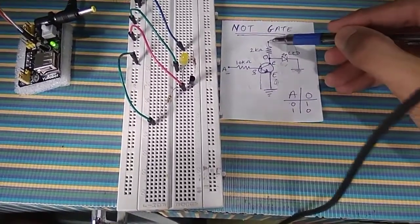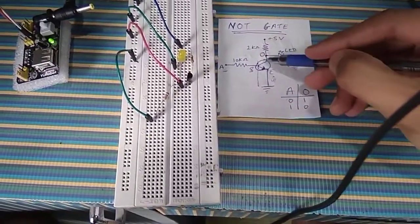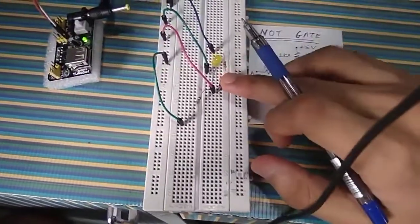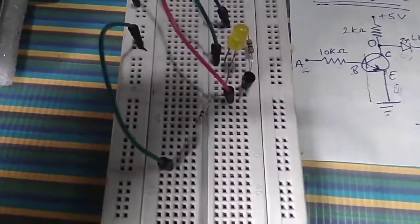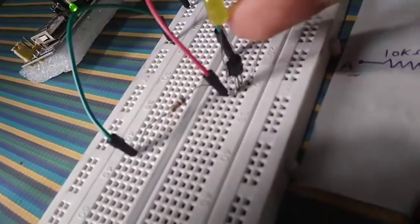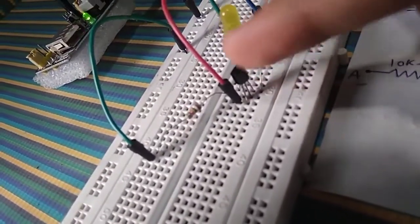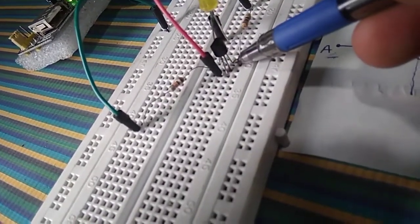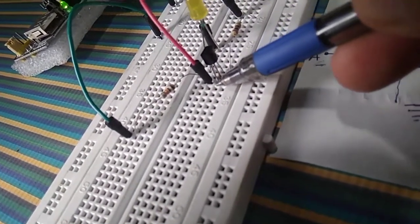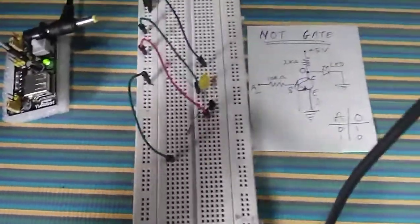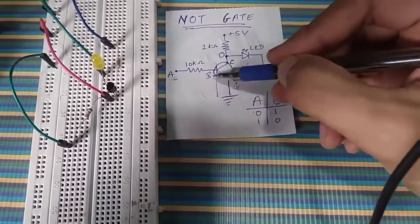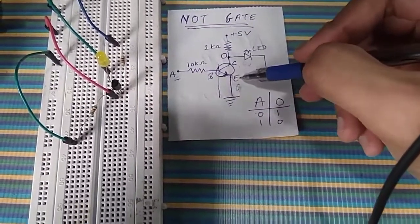First, I have connected a 5-volt supply to this transistor. The transistor I am using here is an NPN transistor, which is a BC547 NPN transistor. The first pin is the collector, then the base, then the emitter — these are the three pins of this transistor.